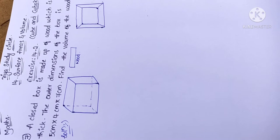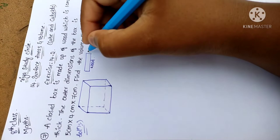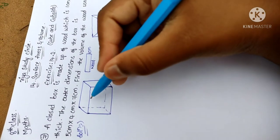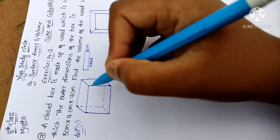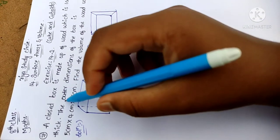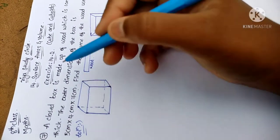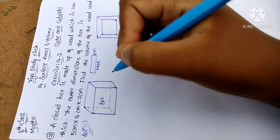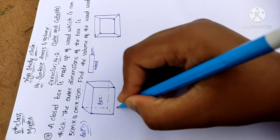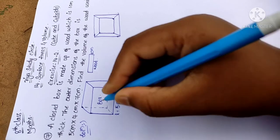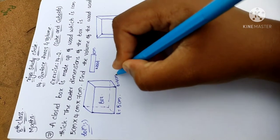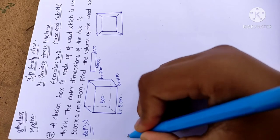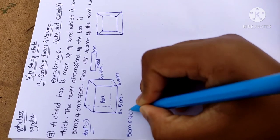The thickness of the wood is 1 centimeter. Let's see the solution. This is the closed box made up of wood. The outer dimensions are 5 cm × 4 cm × 7 cm — that means length × breadth × height. So length L = 5 cm, breadth B = 4 cm, and height H = 7 cm.